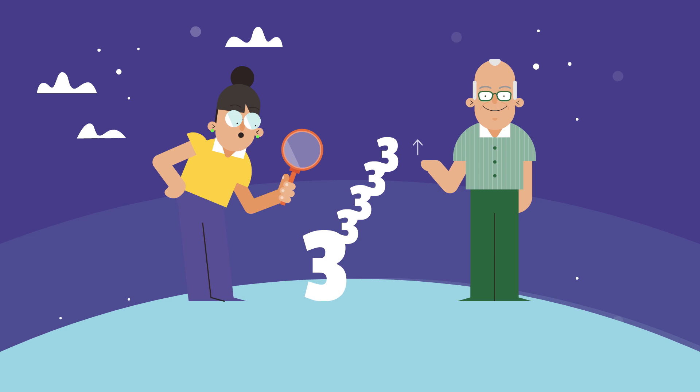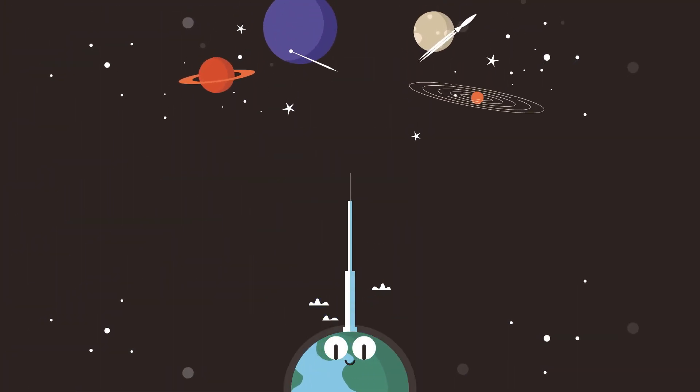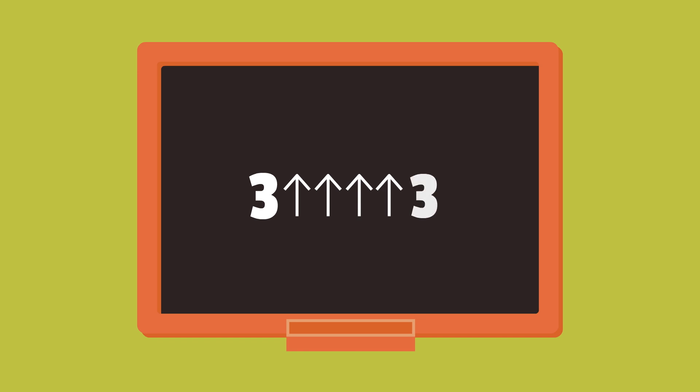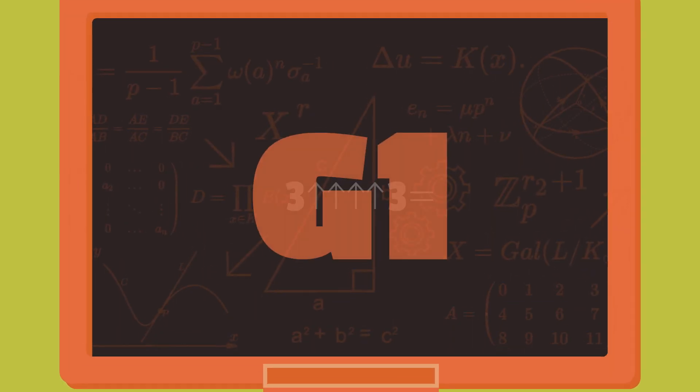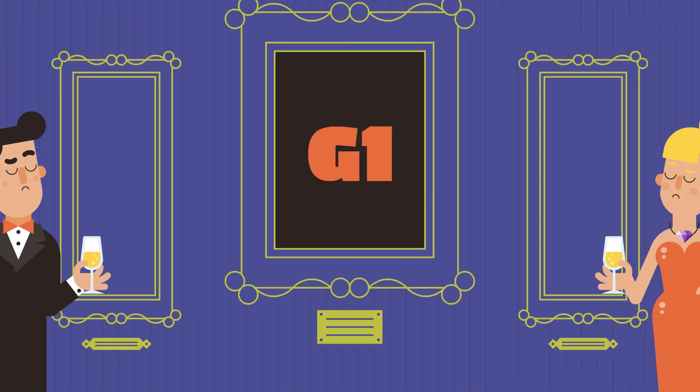And this is with only 3 arrows. If we take this number and make it a number of levels in a tower of 3, we have something pretty enormous that we could write simply with 4 arrows. Mathematicians called that number G1. G1 is of course unfathomable.